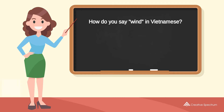How do you say 'wind' in Vietnamese? Xa. Try to pronounce the word. Xa. Repeat the word. Xa.